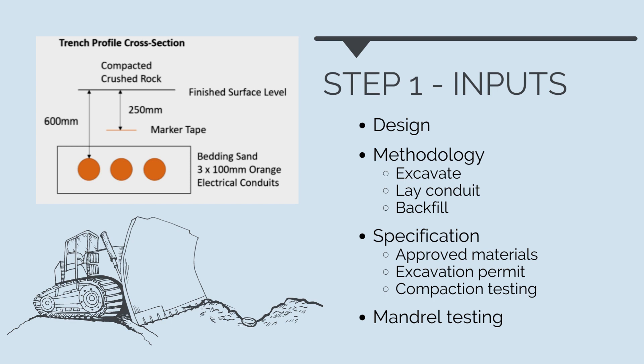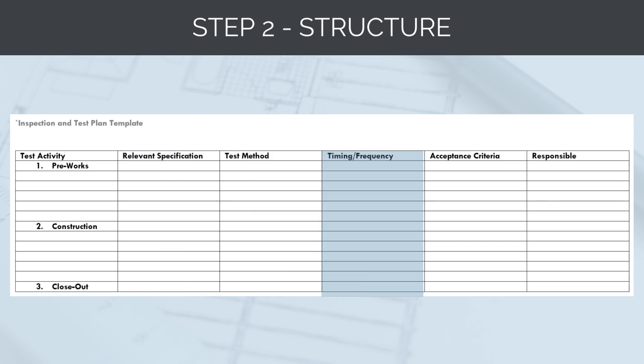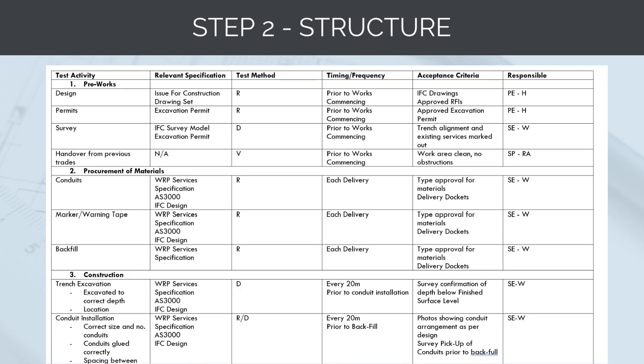Reviewing the project specifications and requirements, we need to be using quarry material from an approved quarry, we need a permit to excavate, and compaction testing is required every 20 metres. Additionally, to ensure that the trench has been constructed correctly before we give access to our electricians to run cables through it — to manage the risk of handover between trades — we want to do a mandrel test: basically a check where we pull a large plastic ball through the conduit to ensure it's not broken and there's no debris in there. Now we've got all the background information, the next step is to populate the structure — listing out our methodology, specifications, test methods, timing and frequency, acceptance criteria, and the responsible person.